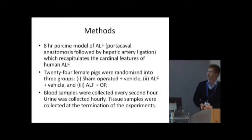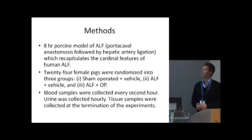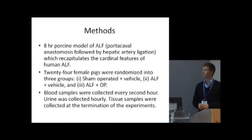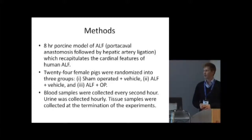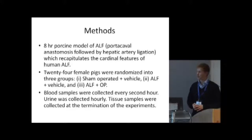This was done in an eight-hour porcine model of acute liver failure — portocaval anastomosis followed by hepatic artery ligation — which encapsulates the main features of human acute liver failure. The pigs were randomized into three groups: sham, acute liver failure placebo-treated animals, and acute liver failure OP-treated animals. We collected blood samples, urine samples, and tissue samples.